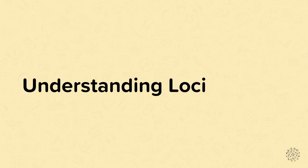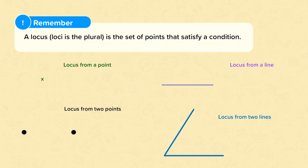Understanding loci. A locus is the set of points that satisfy a condition. The plural of locus is loci. These are the loci that you should be able to recognise.